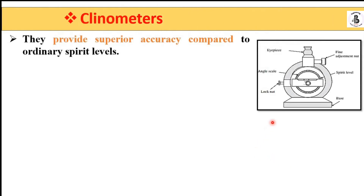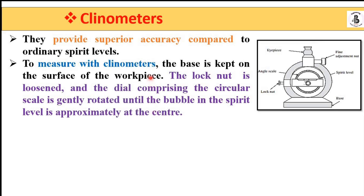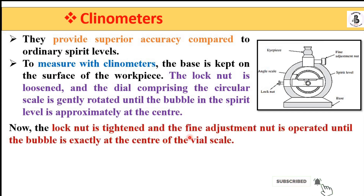Clinometers provide superior accuracy as compared to ordinary spirit levels. For measurement, the base is always kept onto the surface of the workpiece, resting using clamps or bolts. The lock nut is loosened during measurement, and the dial is gently rotated until the bubble of the spirit level is approximately at the center. Then the lock nut is tightened and the fine adjustment nut is operated until the bubble is exactly at the center of the vial scale.